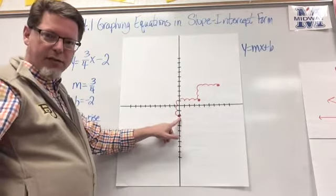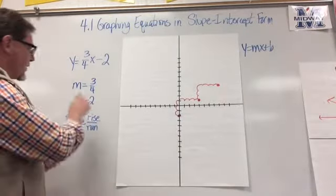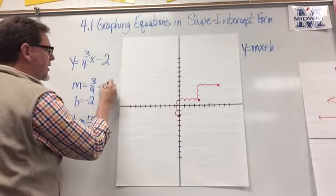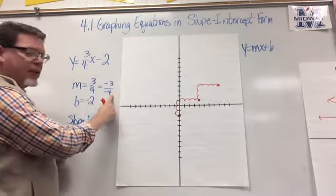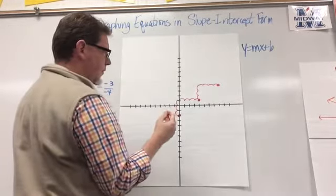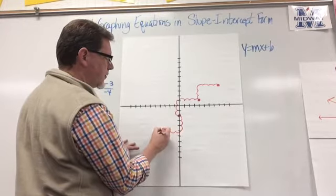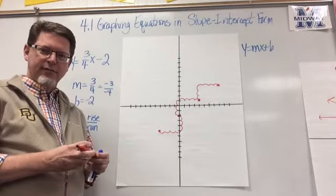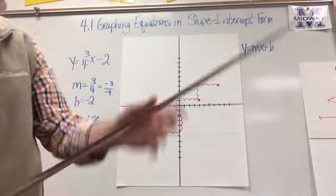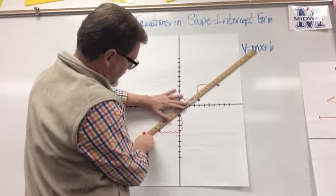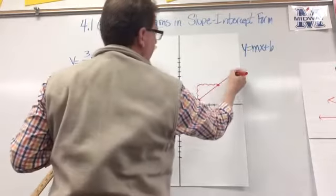But you can also go from the original y-intercept in the opposite direction. You can go down because 3/4 is exactly the same as negative 3 over negative 4 — a negative divided by a negative is still positive. So I can go down 3 and to the left 4 and still land on the line. Let's verify: down 3, left 4 — yes, that fits perfectly. With a positive slope you can go up-right or down-left.